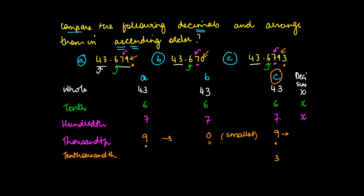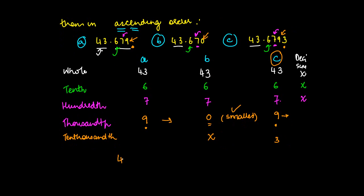It is obviously not applicable because this is the smallest number. So if I have to write in ascending order, obviously 43.670 is the smallest one of these three.